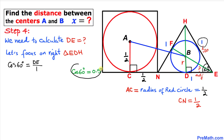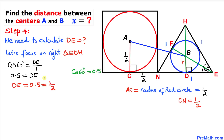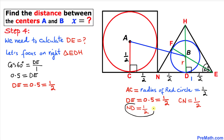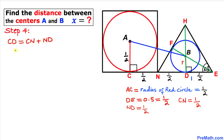We know cosine of 60 degrees is 0.5, so 0.5 equals DE over 1, which means DE equals 1/2. Therefore this part DE equals 1 over 2. Moreover, NE is the side length of the equilateral triangle, which is 1, so we can find ND: ND equals 1 minus 1/2, which is 1 over 2.